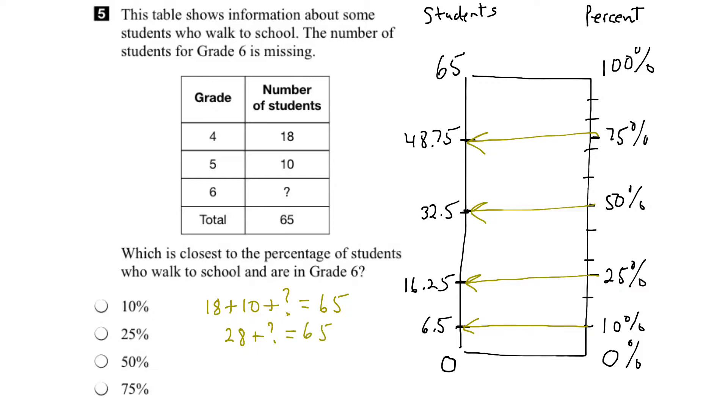We want to get rid of the 28 so we get the question mark all by itself. So we can subtract 28 from this left side. And whatever we do to one side, we've got to do to the other. So we can subtract 28 from the right side. Now the 28s would cancel. And what we'd be left with is the question mark. So the number of students walking to school in grade 6 is 37.